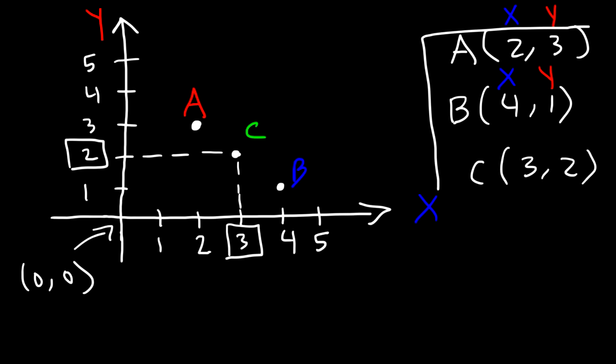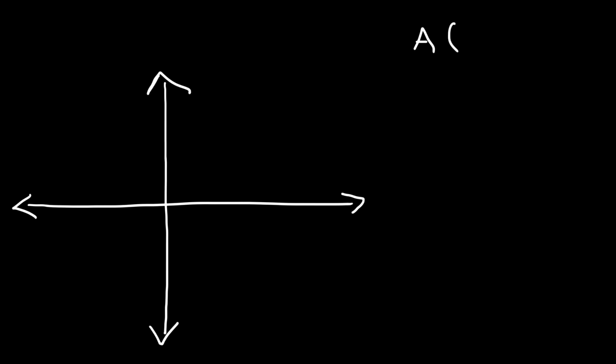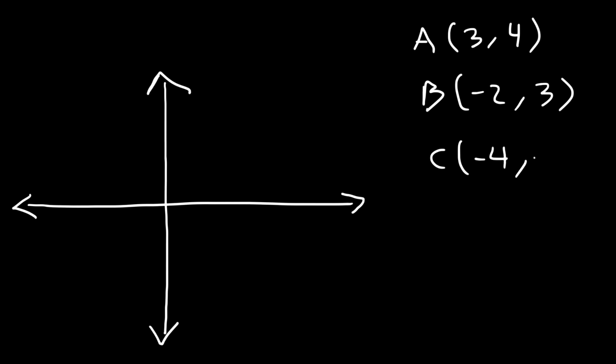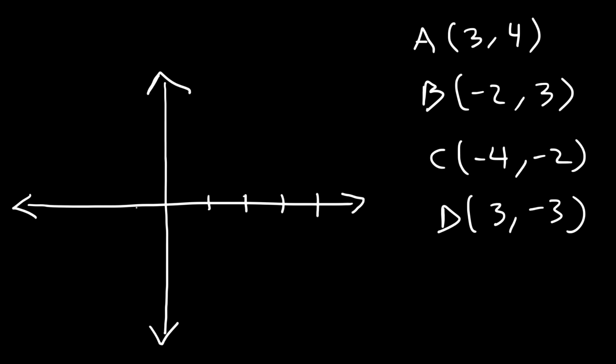These are ordered pairs, by the way — you have an x-coordinate and a y-coordinate. Now let's try some more examples. Go ahead and plot the following points: (3, 4), (-2, 3), (-4, -2), and (3, -3). Feel free to pause the video as you plot those points.